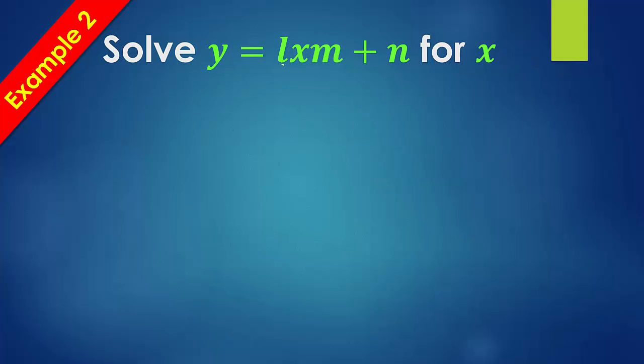So same here, y equals lxm plus n, and we're solving for x. So we want to start off, this is what we want by itself, so start off with addition and subtraction, subtract the n away. We can't combine those, so it's just y minus n equals lxm. And remember, this is all multiplication here. So this is l times x times m, and we want that x by itself.